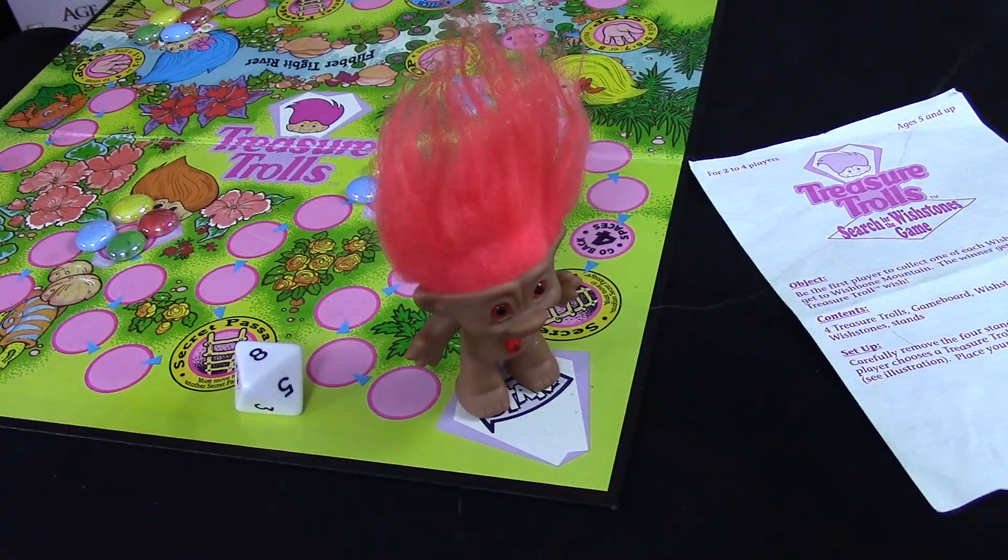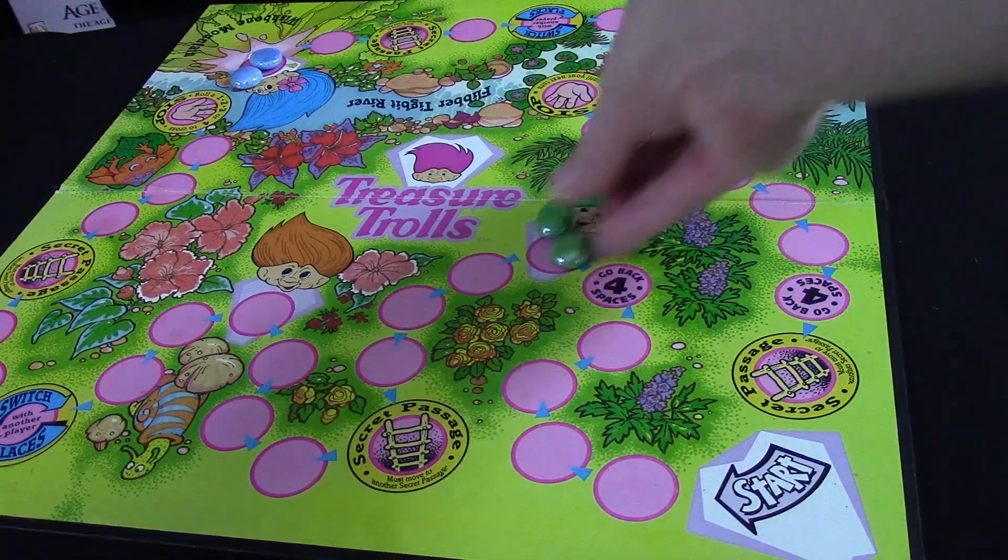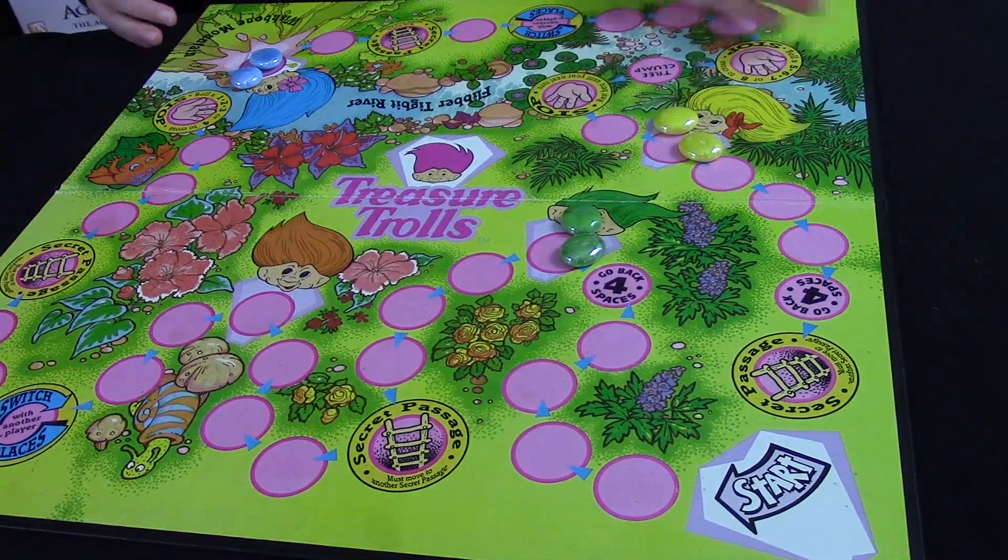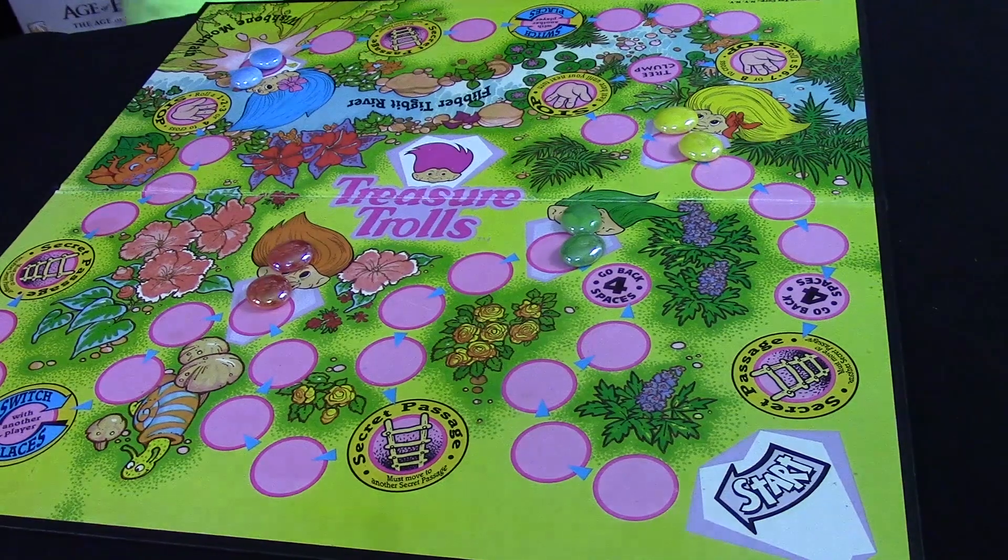To set up the game, first each player picks one of the little hobgoblins that perpetually looks like it's going to sneeze but is really thrilled about it, and places it on start. Put a number of wish stones equal to the number of players on each of the four treasure trolls on the board. Now each treasure troll should be given a different color of wish stones. The game is now set up and ready for your miniature monsters to begin ransacking the countryside in their insatiable quest for ambition-based jewels.